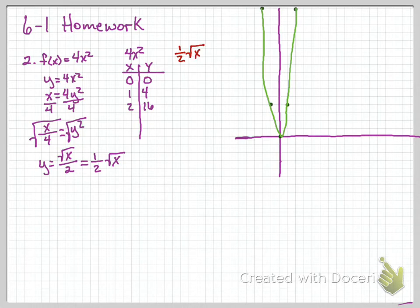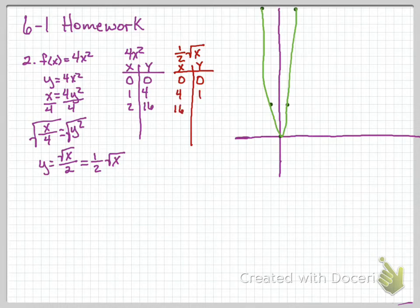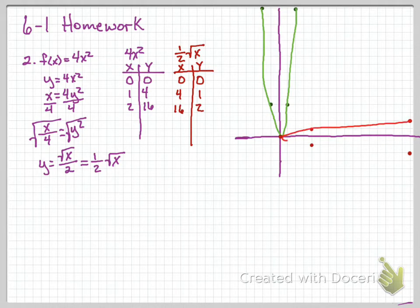For one-half square root of x, our x and y are reversed. So we'll do 0,0 — that's our origin and vertex. Then 4,1 and then 16,2. We will also reflect across the x-axis to place our other points: 0,0; 4,1 and negative 4,1; 16,2 and negative 16,2. And we'll draw in our line.